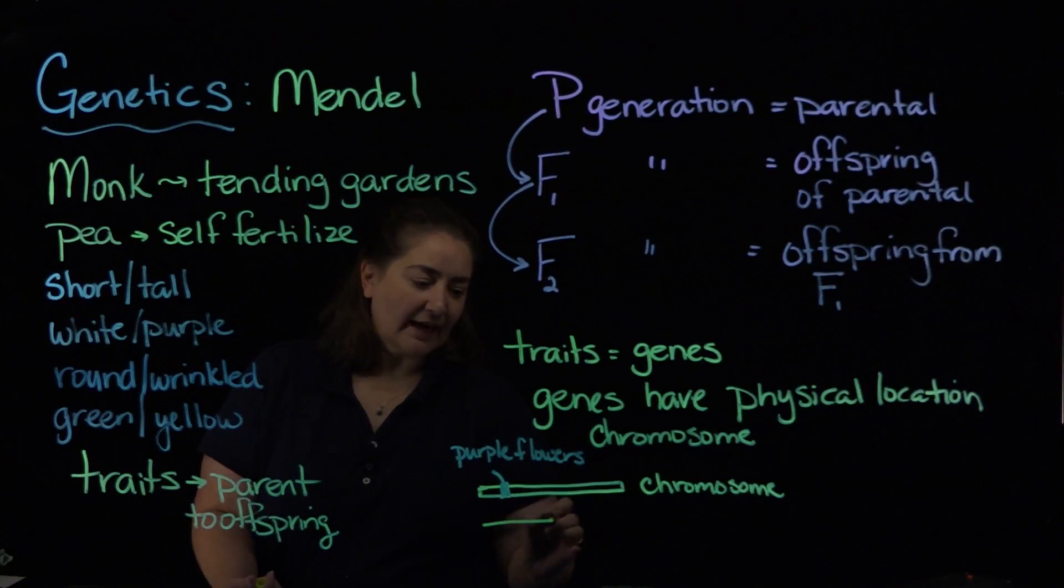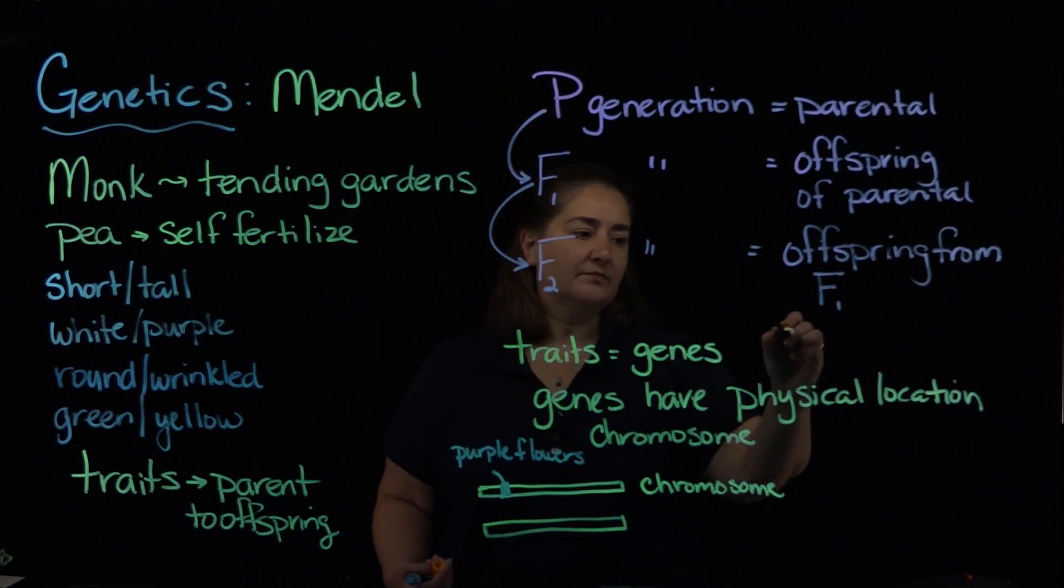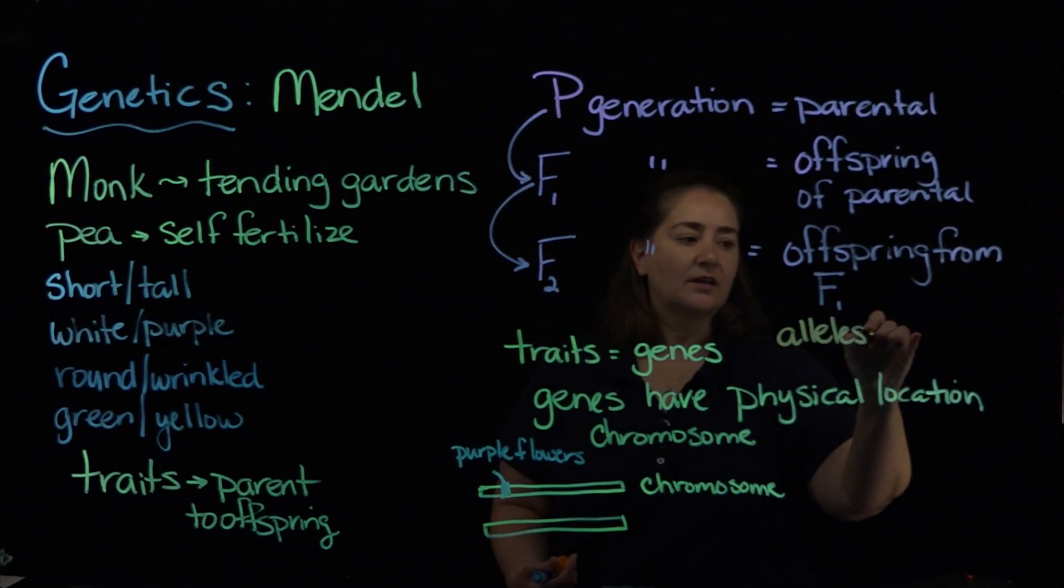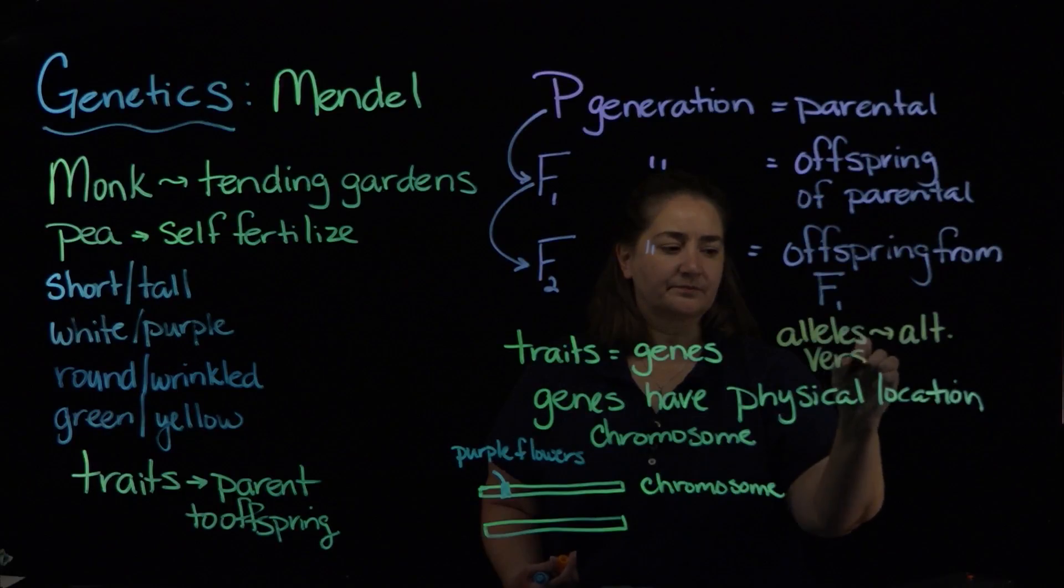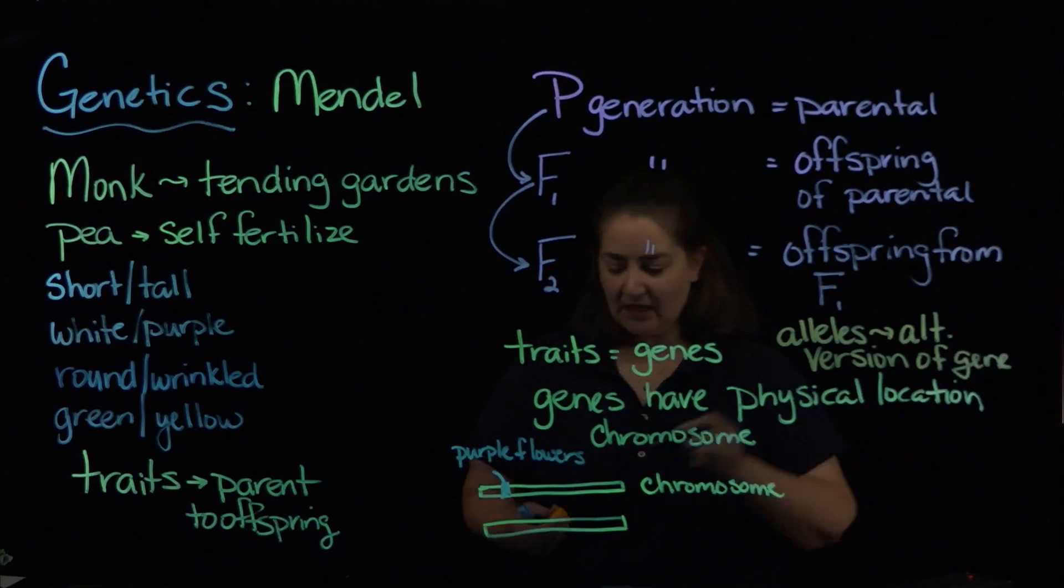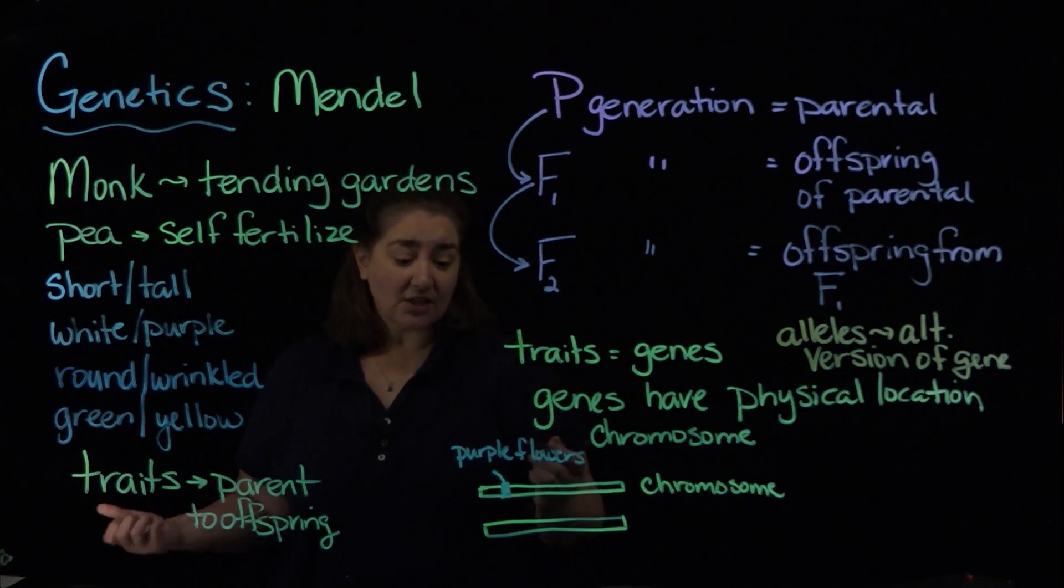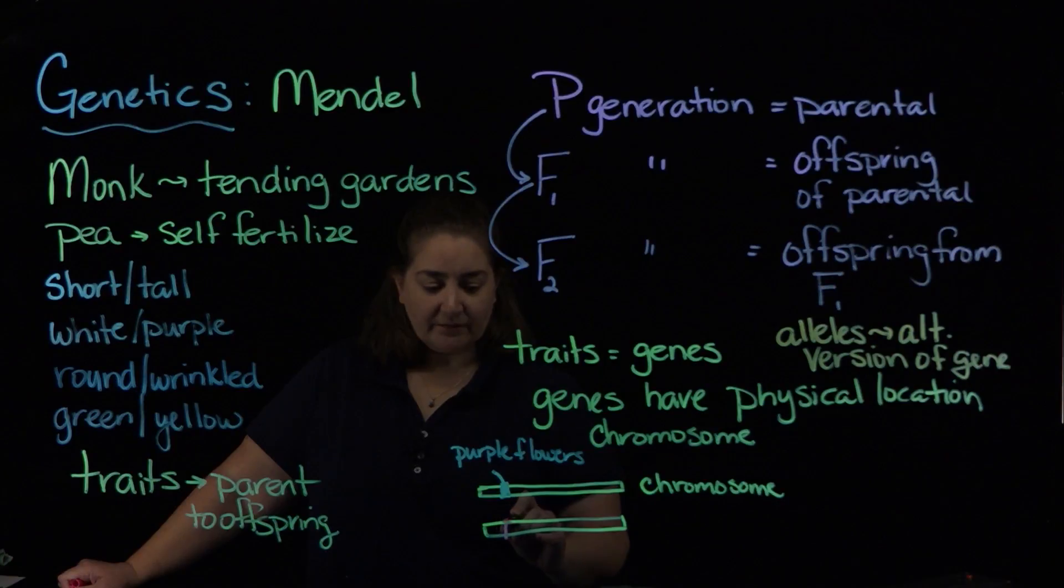Now what we have, when we talk about genes, we have alleles. Alleles are an alternative version of a gene. Now sometimes those alternative versions are going to be something that's detrimental, it'll be a mutation. Sometimes it's normal variation in the population, and we can put this in here.